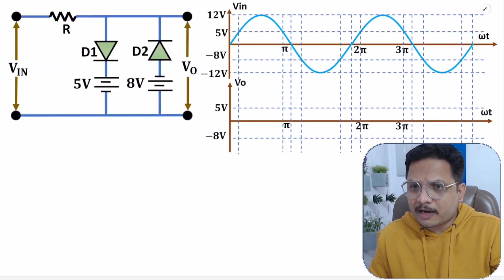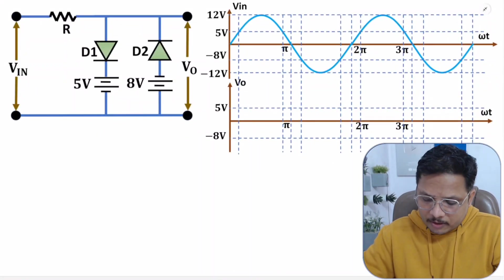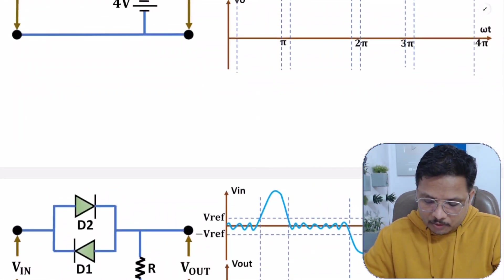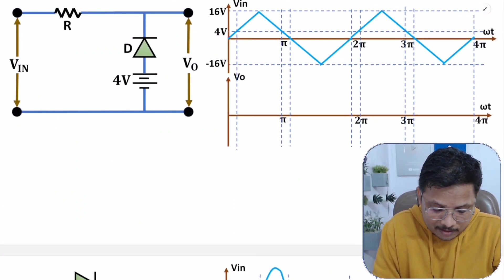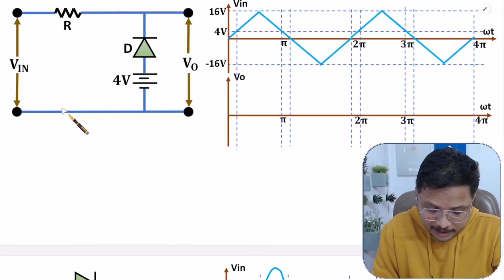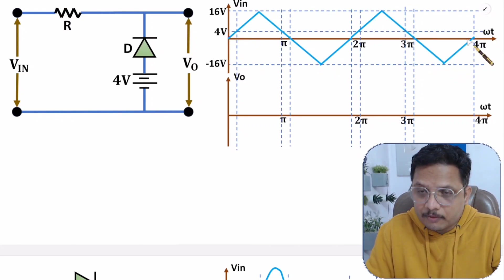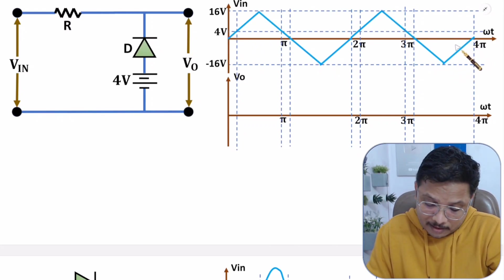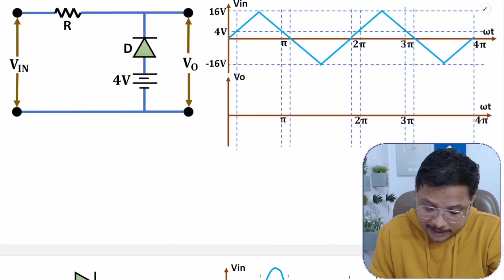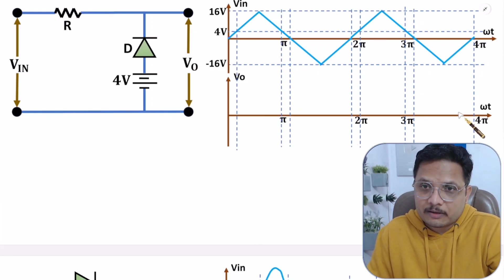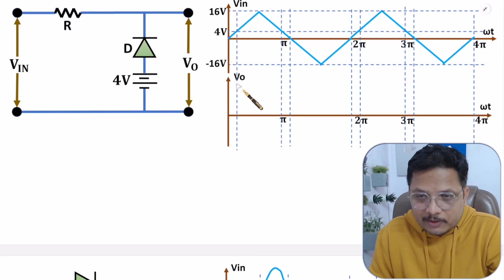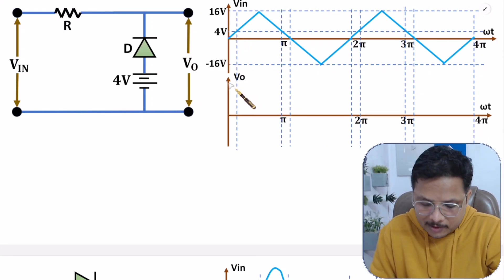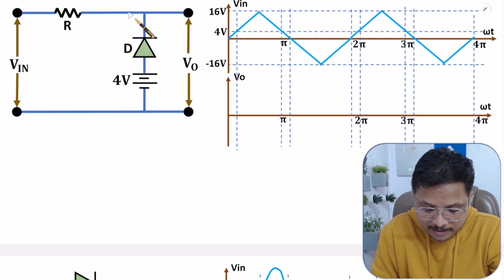I hope you might have tried all those questions. Now I am going to solve the first question. In the first question, you can see what is given: this is a clipper circuit in which V_in is a triangular wave. We need to find the output waveform. To determine how the output waveform appears, we have to observe how the diode is functioning in the clipper circuit.